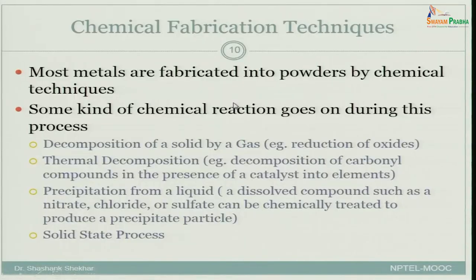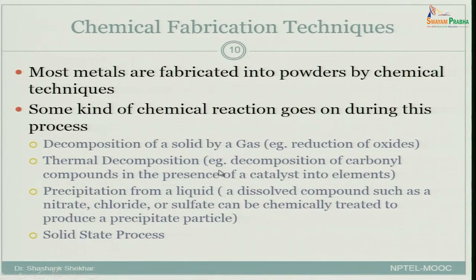We will now move on to another set of techniques — chemical fabrication techniques — and this itself involves a lot of sub-techniques. Most of the metals we see are fabricated into powder by chemical techniques. Some methods are: decomposition of a solid by gas (for example, reduction of oxide), thermal decomposition, and decomposition of carbonyl compounds in the presence of a catalyst into elemental powder.